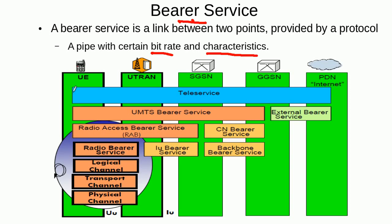Consider a mobile browsing a website — the service spans from the user equipment to the PDN. To support this service we need two bearers. One is the UMTS bearer service, which goes from the GGSN to the user equipment, spanning the entire internal network. The other is the external bearer service, which extends from the GGSN to the PDN.